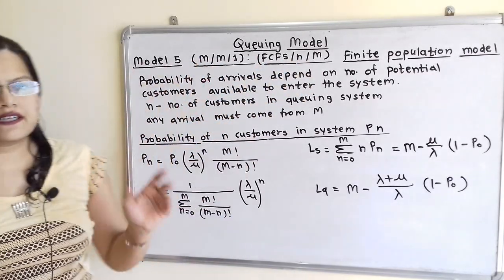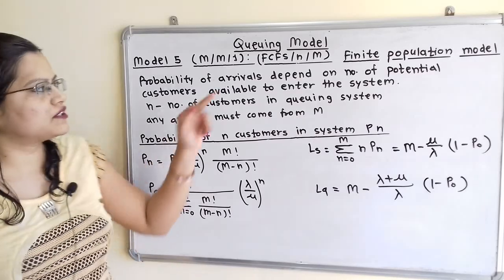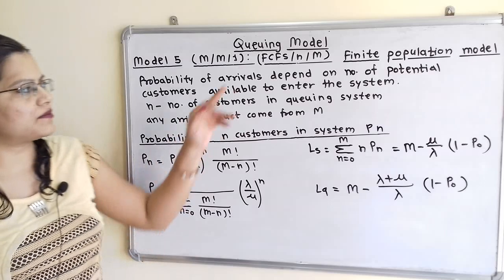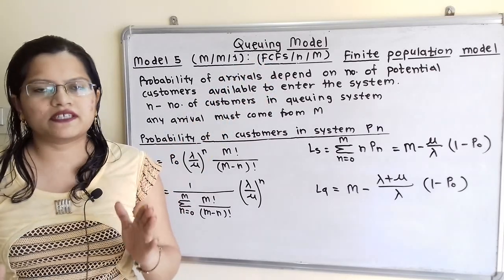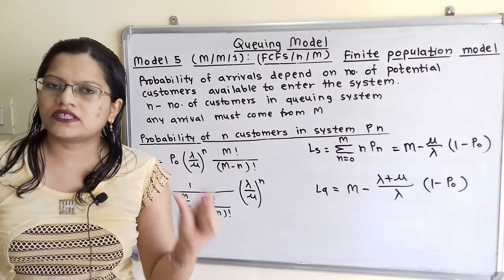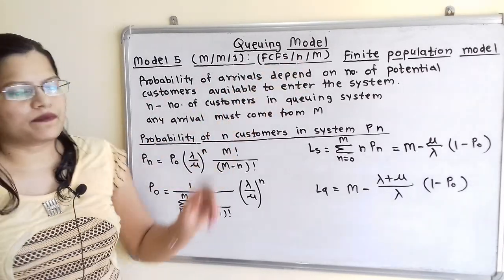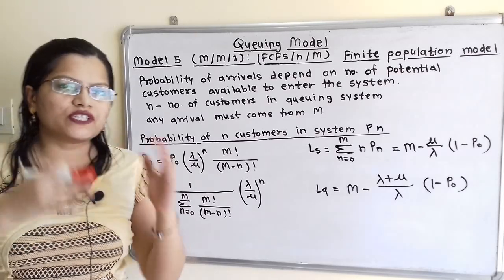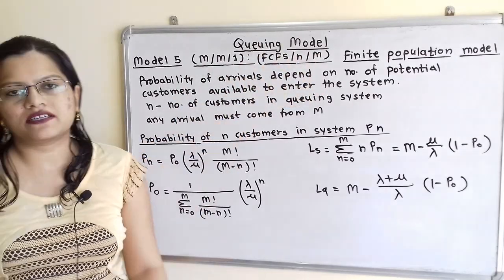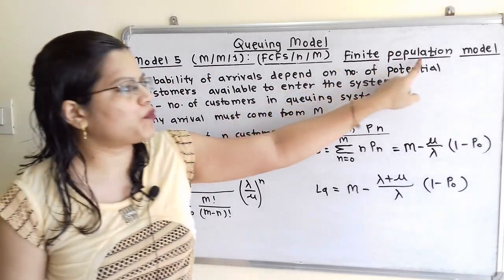The first M indicates the Poisson arrival distribution. The second M indicates Poisson service time distribution. The 1 means there is a single server provided. FCFS means service is on a first-come-first-serve basis. N is the number of customers in the queuing system, which is limited and equal to N. Capital M is the calling source or population from which customers arrive, which is also finite and equal to capital M. So this model 5 is known as the finite population model.